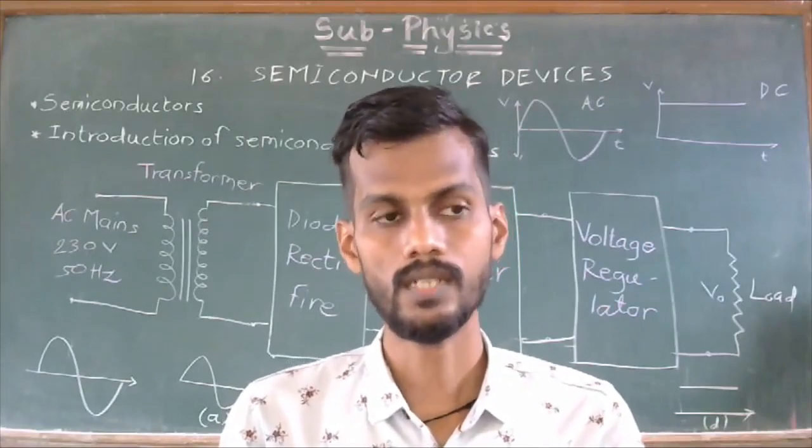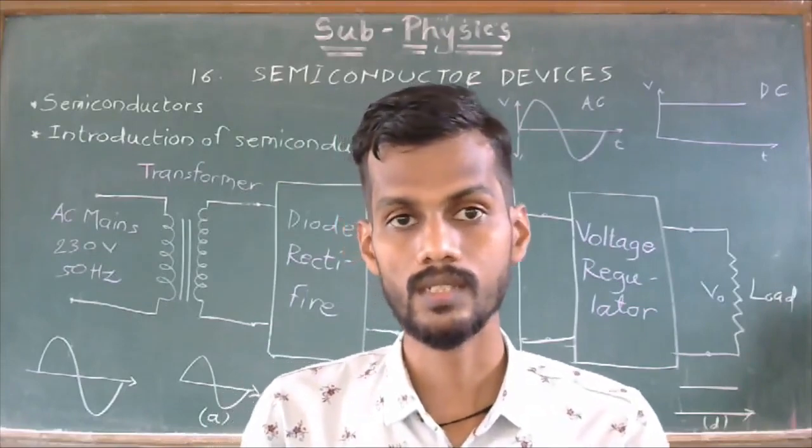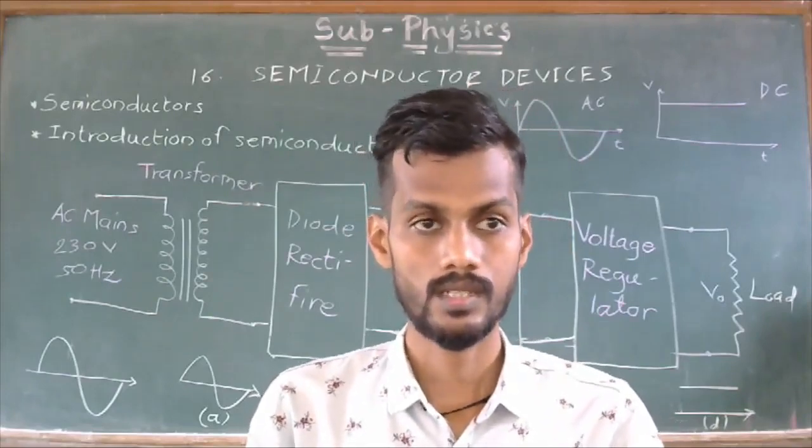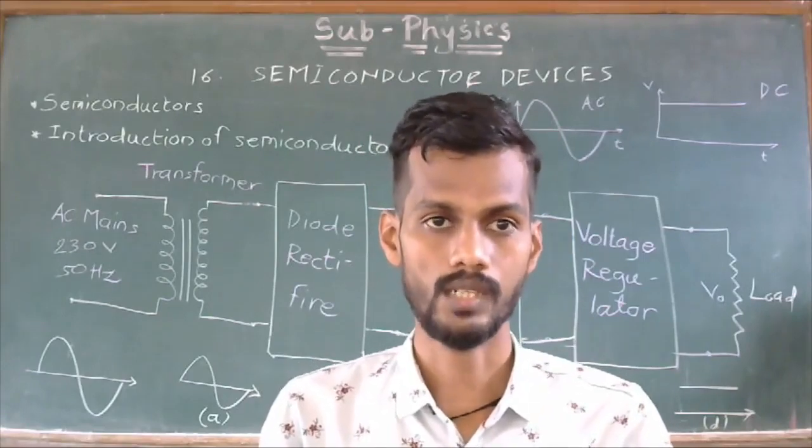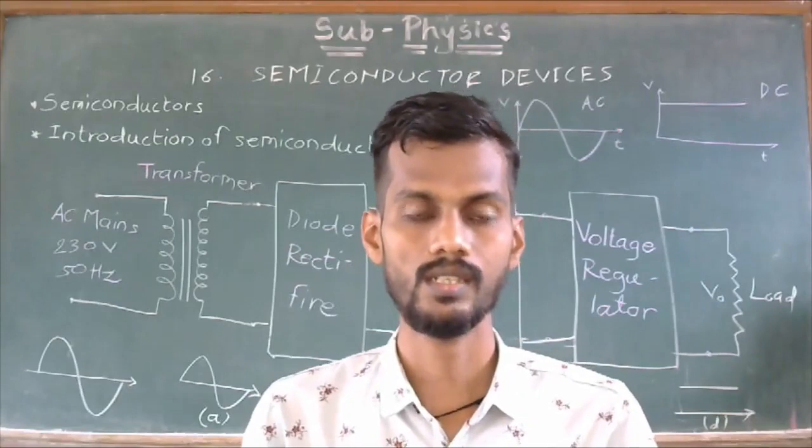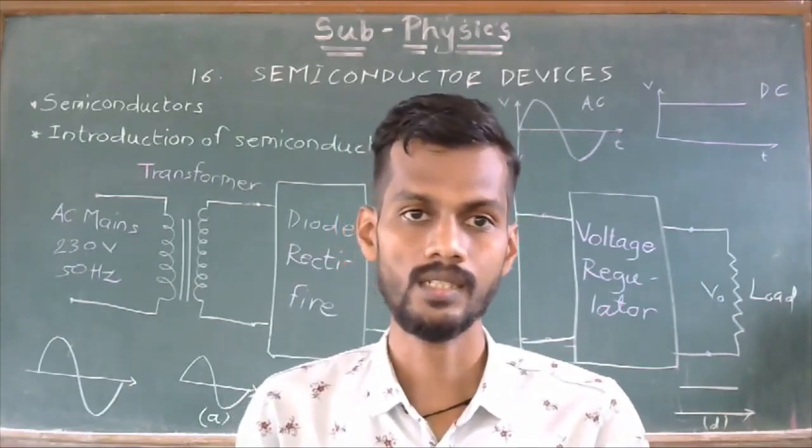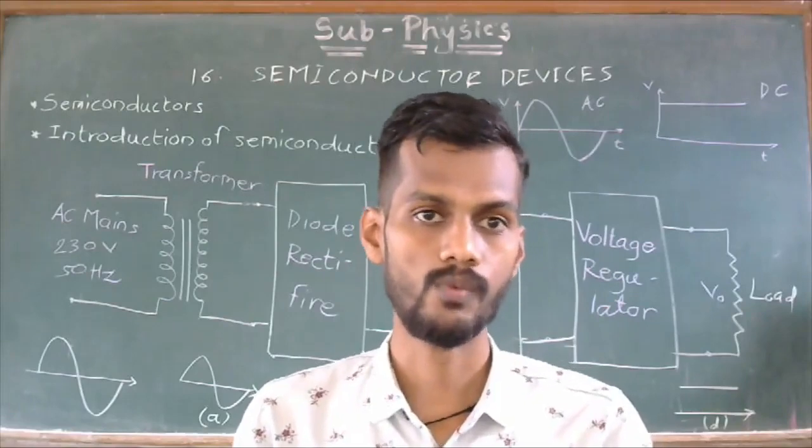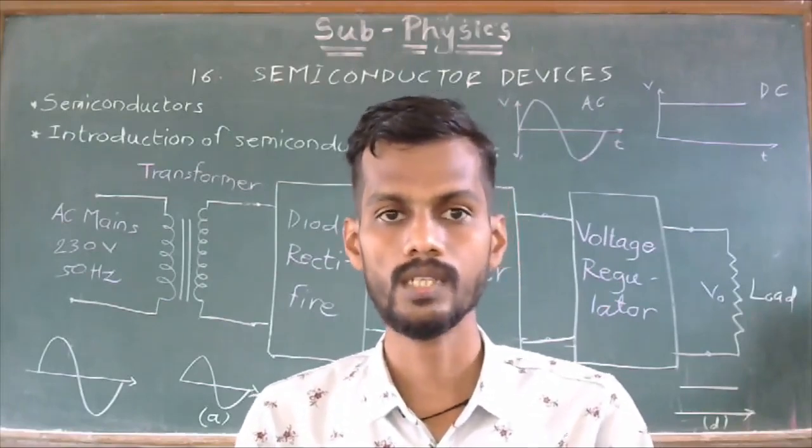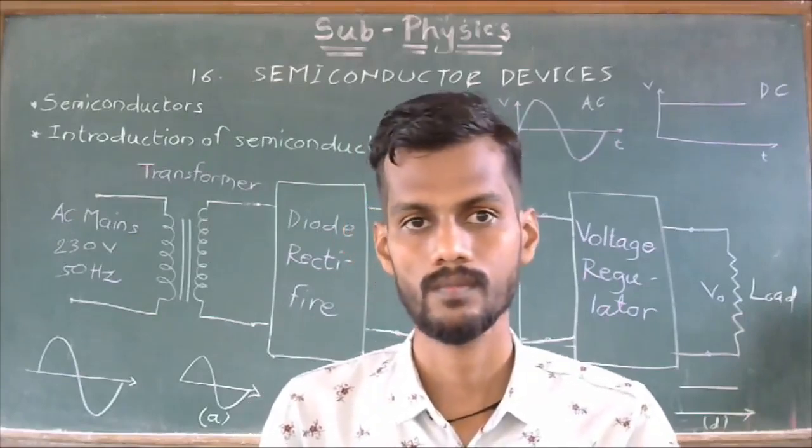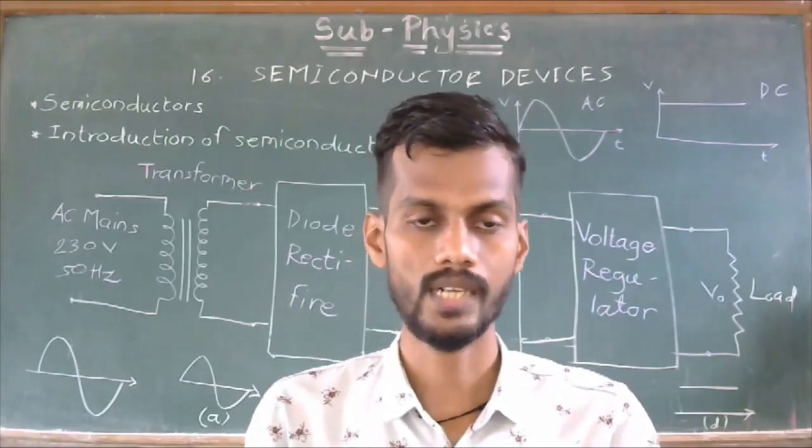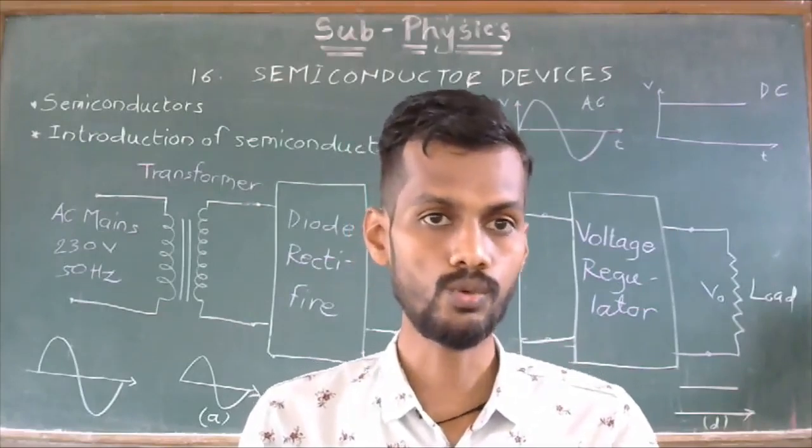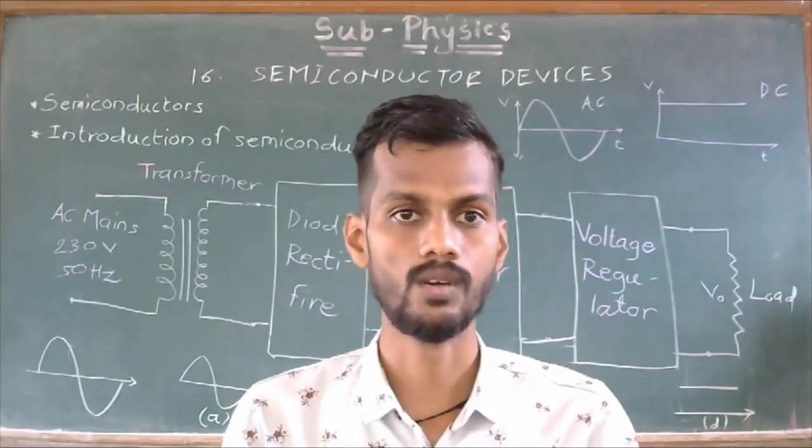Now, we have revised some points from the topic semiconductor which we have studied in our earlier standard. Let's move forward and see what is an introductory part of our new topic Semiconductor Devices. The generation of AC power at power stations is more cost-efficient than generation of DC power. Also, transmission of AC power is more economic than transmitting DC power. AC voltage varies sinusoidally. In India, it is 230V and has a frequency of 50 Hz.